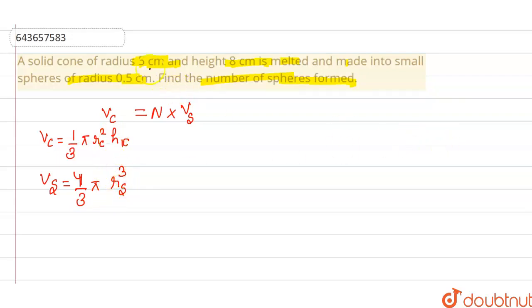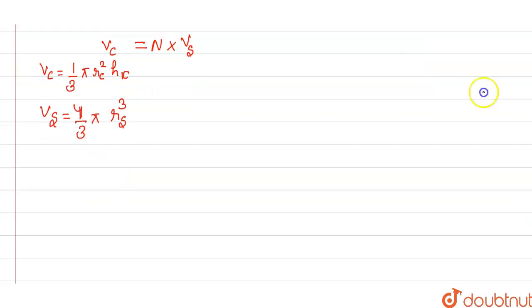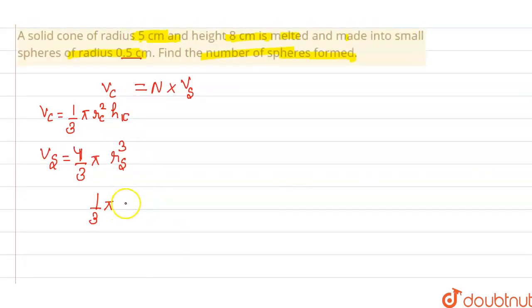Now, equating both these values, since we have radius and height of the cone and radius of sphere, we can easily find the value of n. Now, 1 by 3 pi radius of cone is 5 cm. We can write it as 25, 5 square 25 into h 8 equal to n into 4 by 3 pi into.